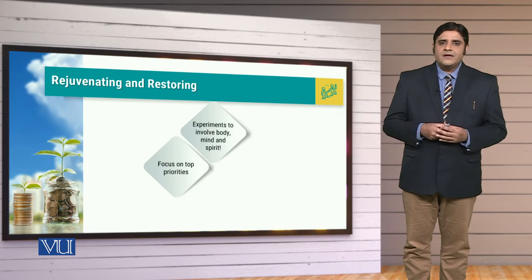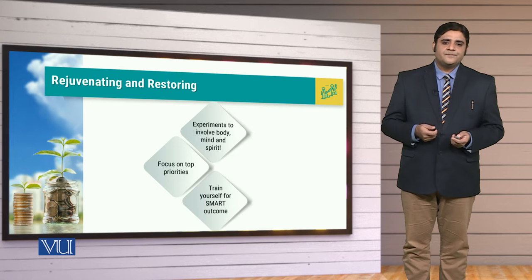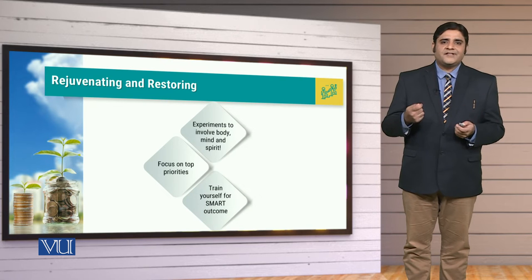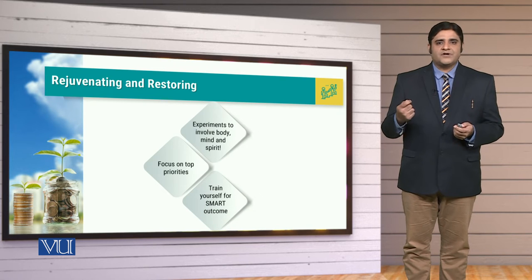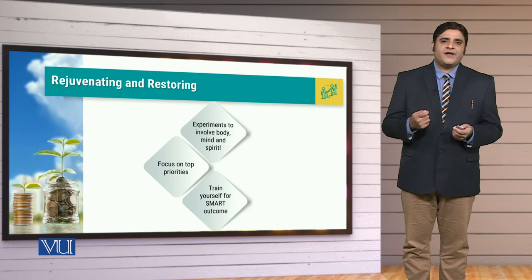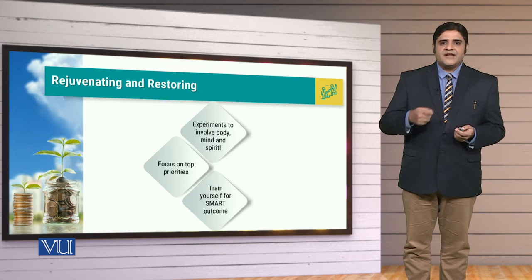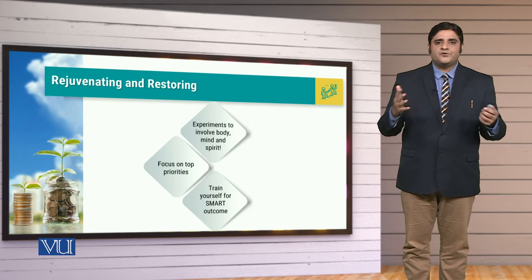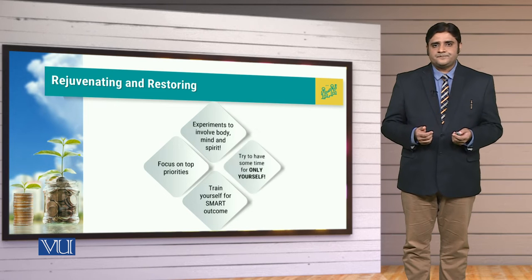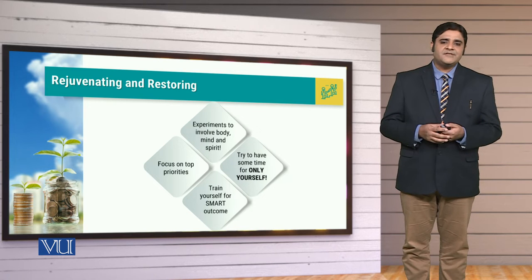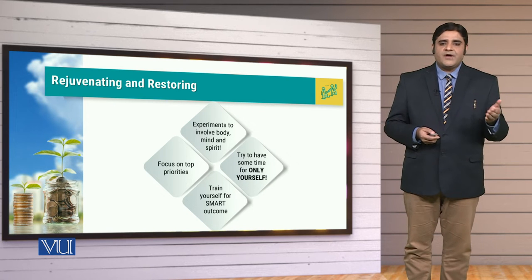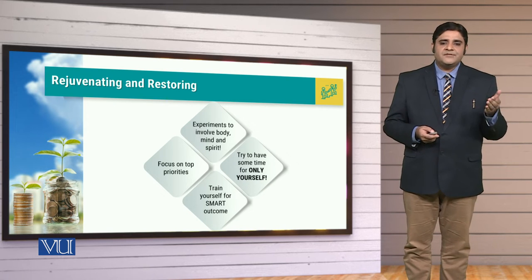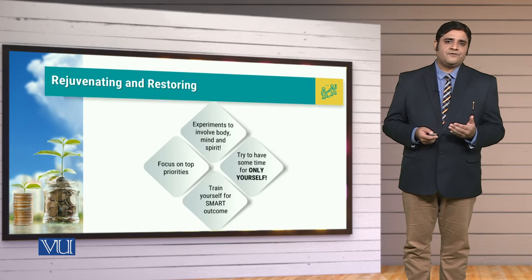Secondly, you should be clear in your priorities. Thirdly, you have to train yourself for smart outcomes. You have to always play specific in measurable terms, in attainable aspects, in a time frame, and you have to be realistic. At the same time, remember to try to have some time only for yourself.